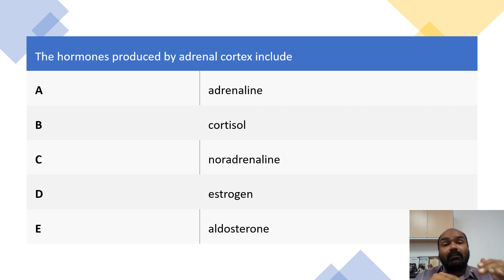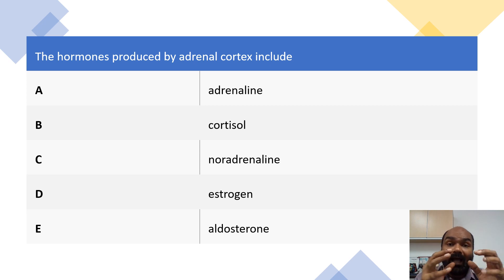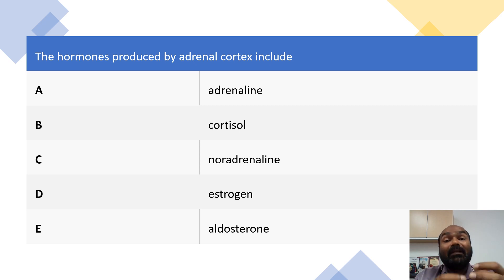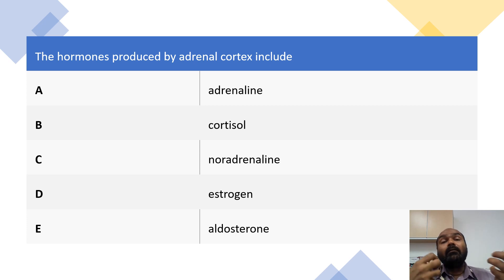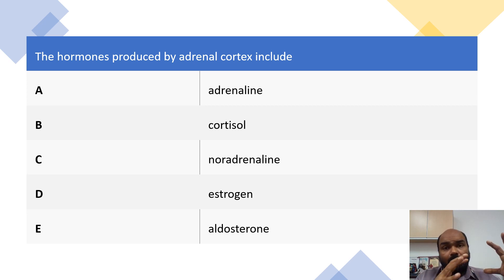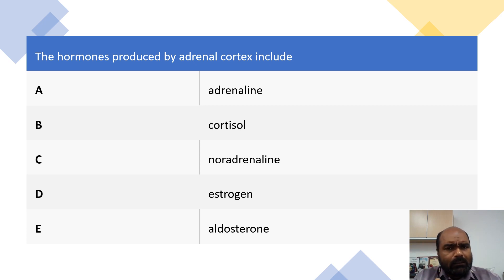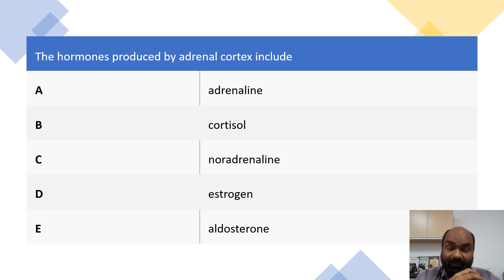Next, the innermost layer of the adrenal cortex — the third layer — is the R: zona reticularis. Zona reticularis produces DHEA, which is the precursor for the production of estrogen and/or testosterone. Also, the adrenal medulla produces adrenaline and noradrenaline, also known as epinephrine and norepinephrine.